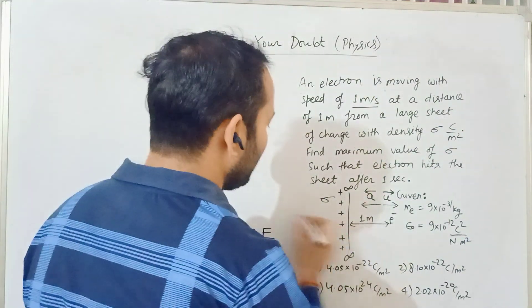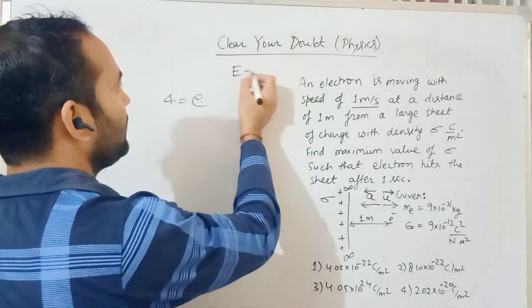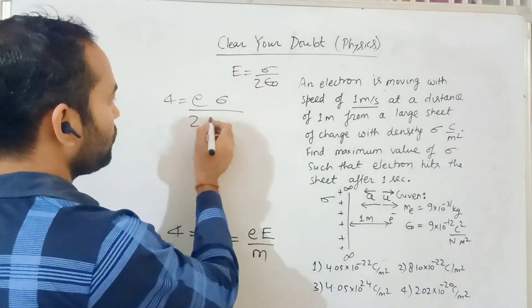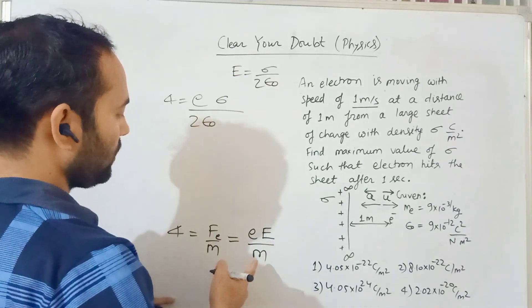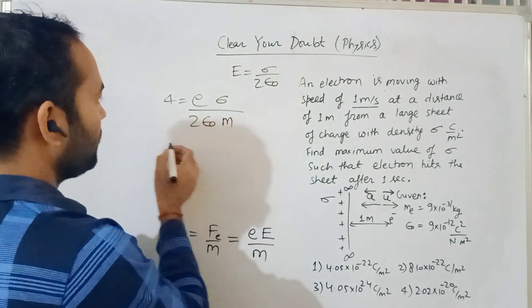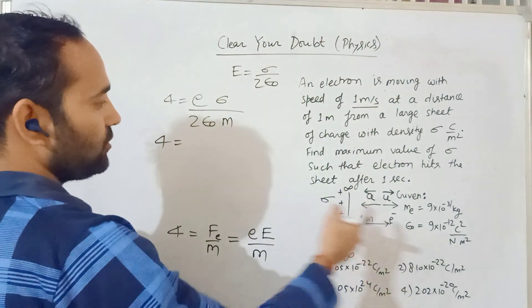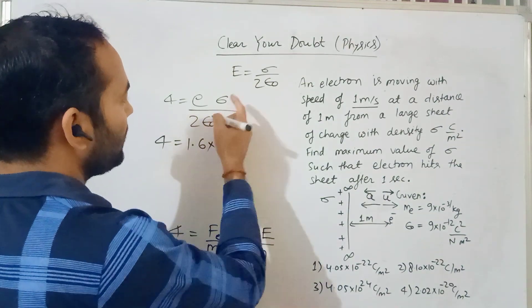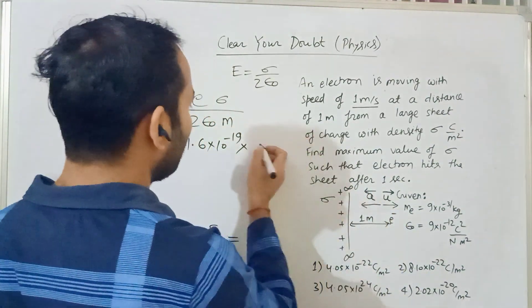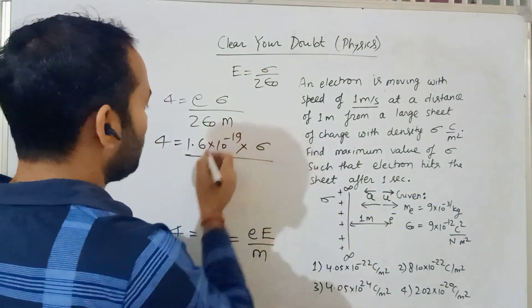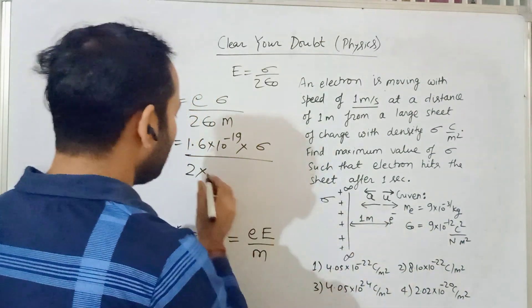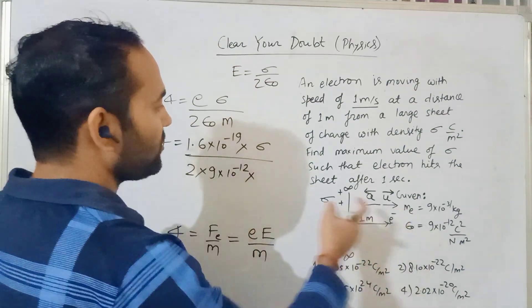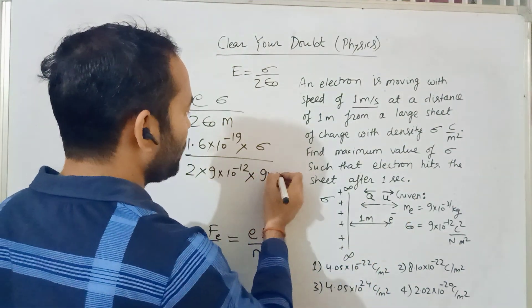What is the value of E? The electric field here is sigma upon 2 epsilon naught. So: 4 = e × sigma/(2ε₀) × m. e is 1.6 × 10⁻¹⁹ coulomb, sigma we need to find - this will be sigma max. Epsilon naught is 9 × 10⁻¹², and mass of electron is 10⁻³¹.